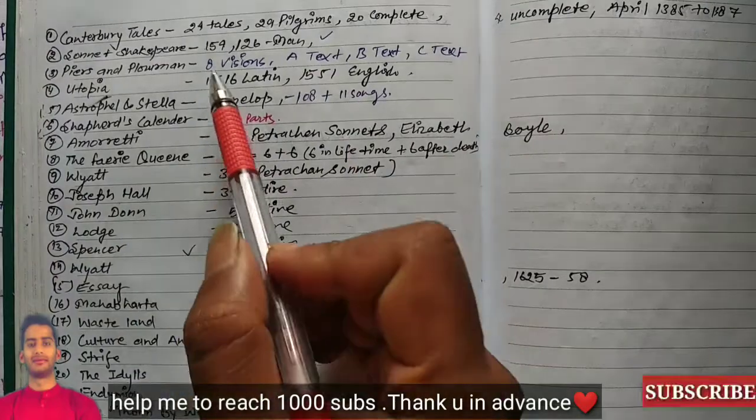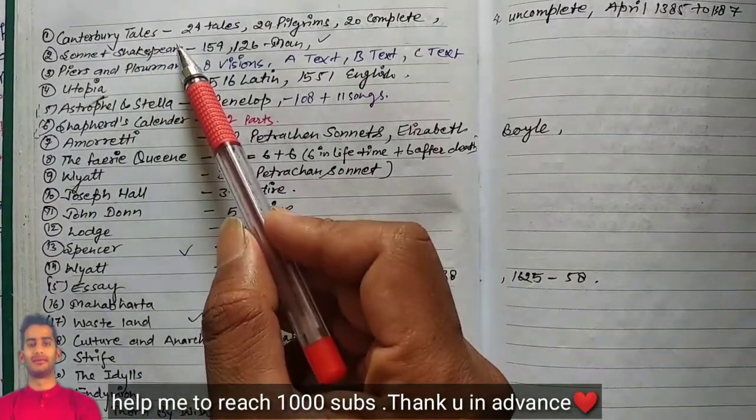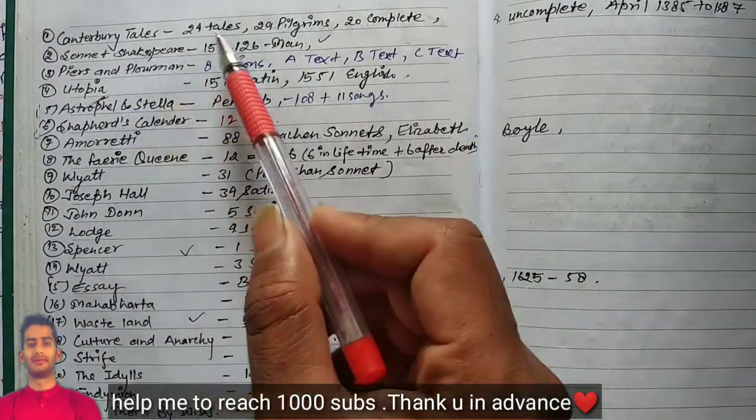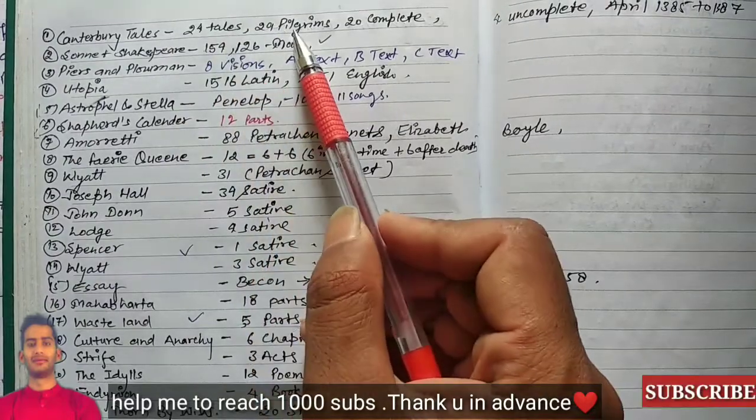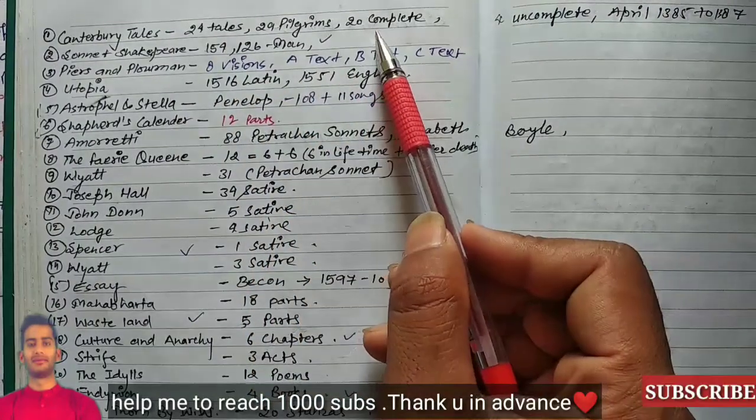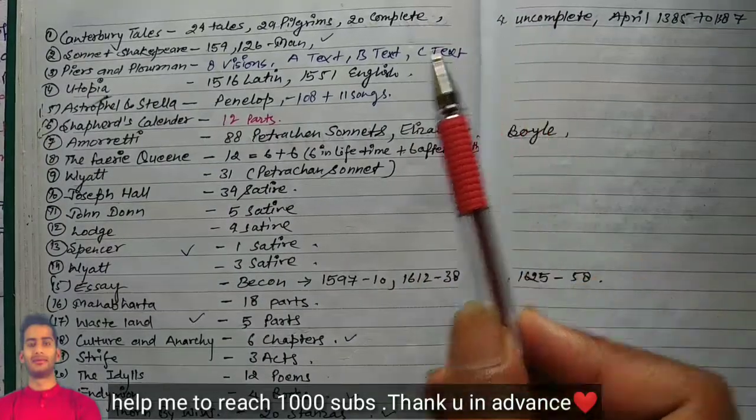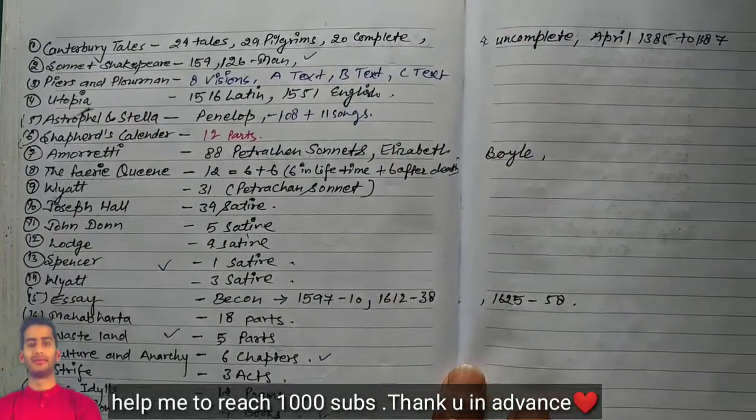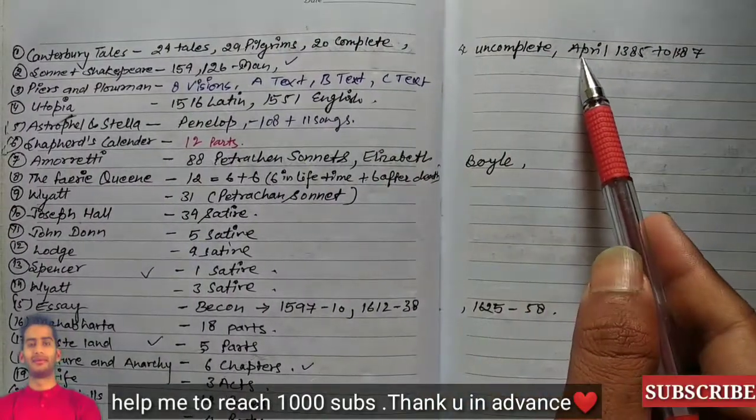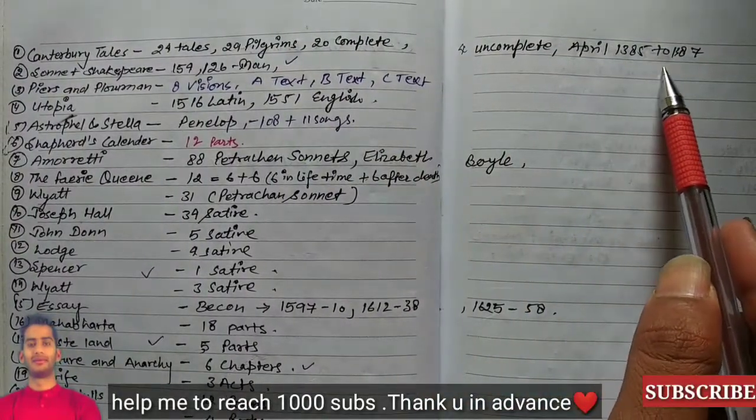Here are some short notes. Canterbury Tales: 24 tales, 29 pilgrims, 20 complete tales, four tales are incomplete. It is considered that this work was written between 1385 to 1387.